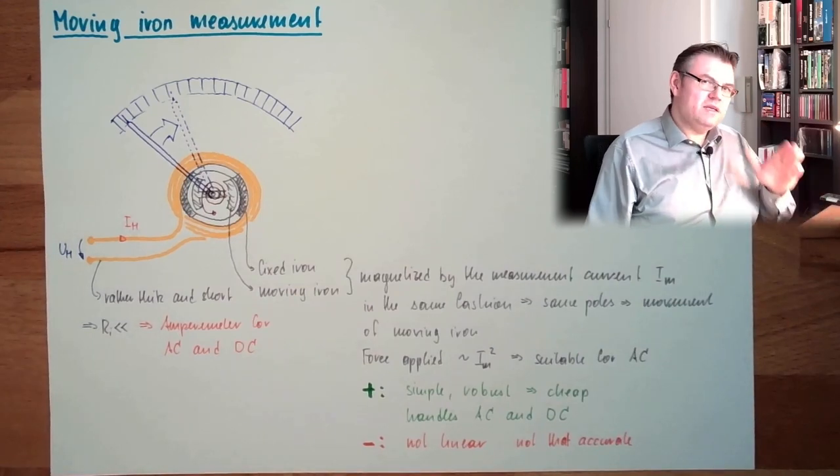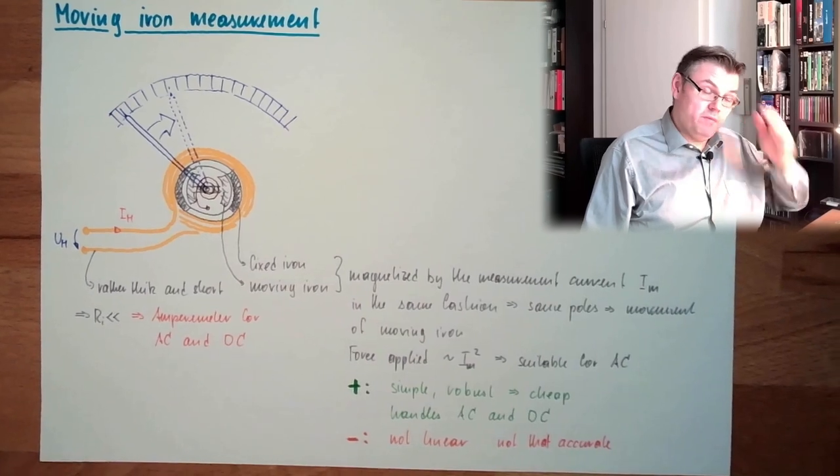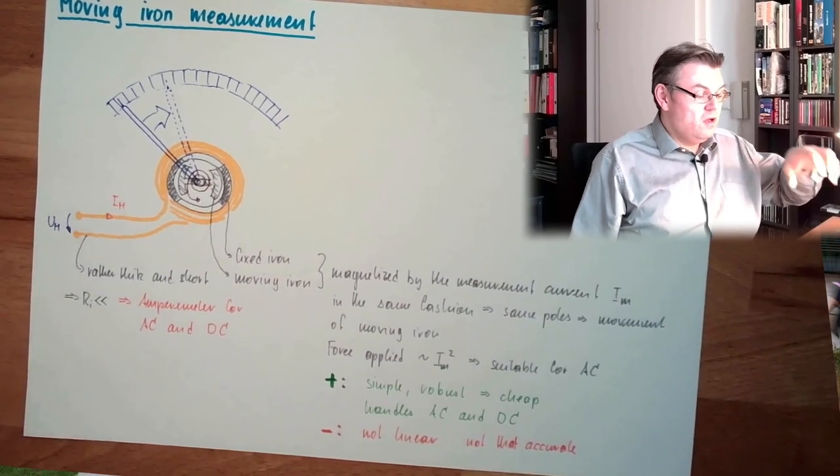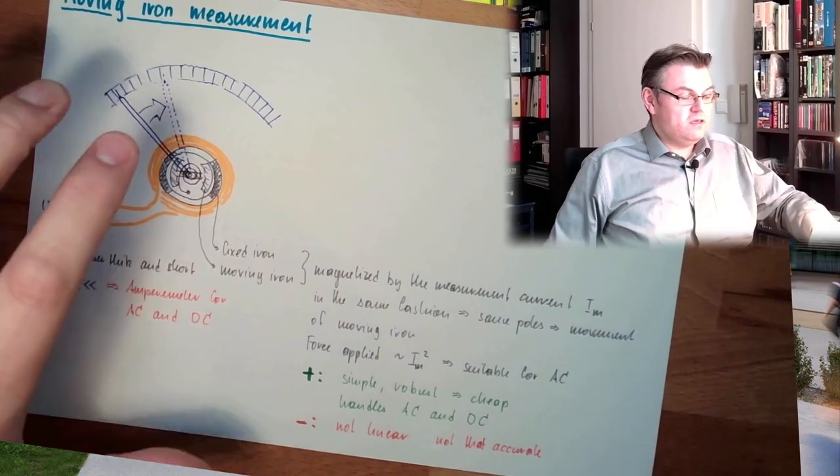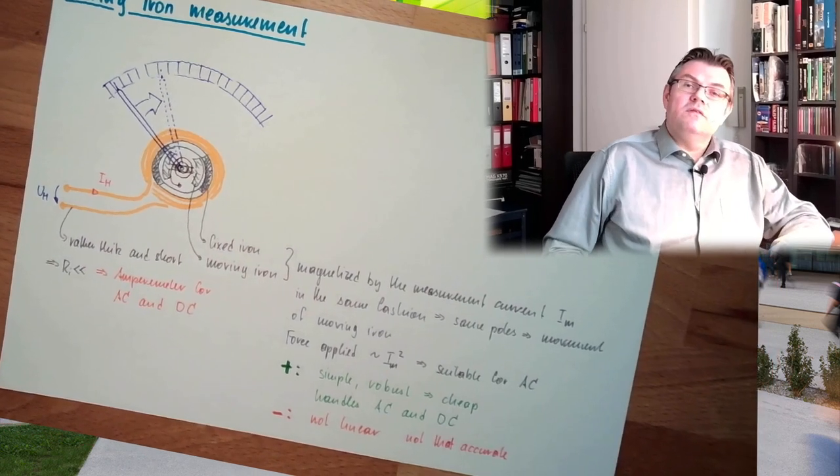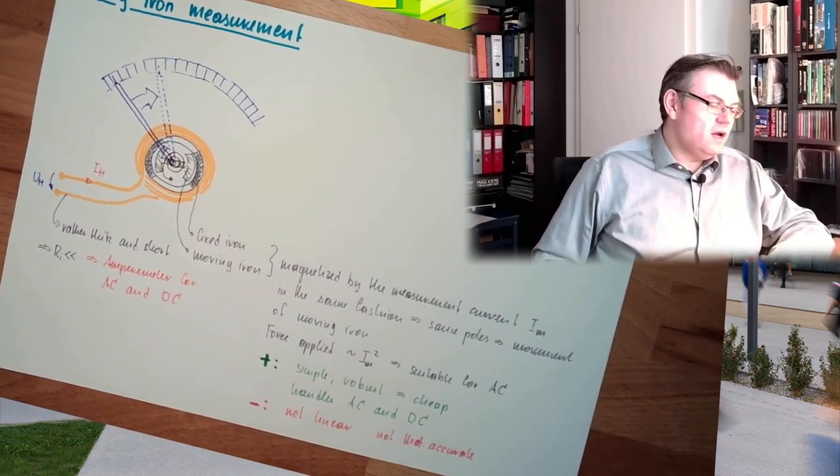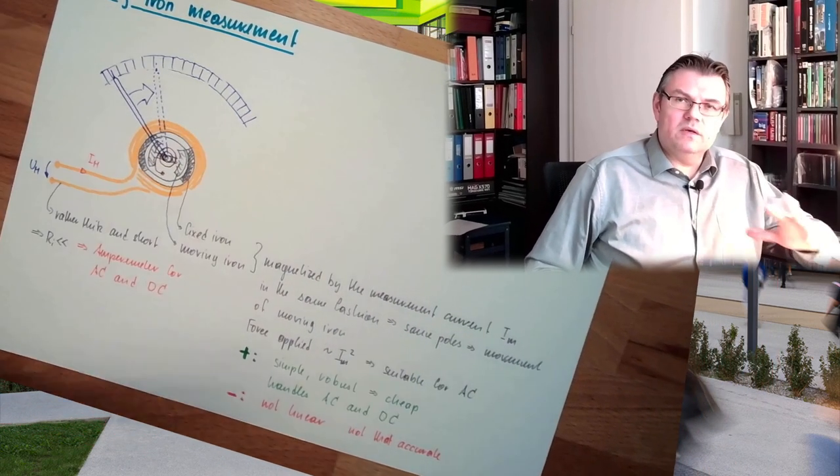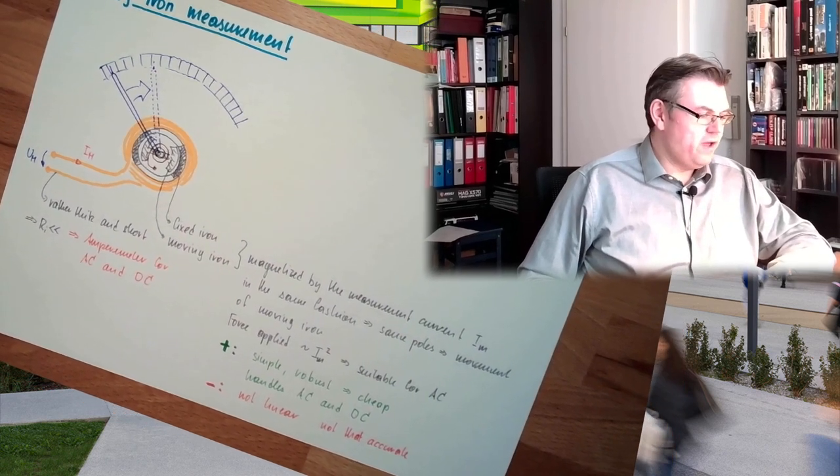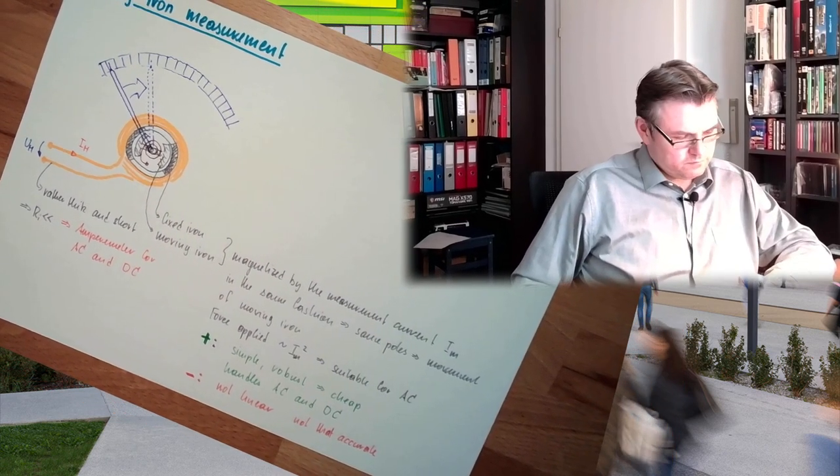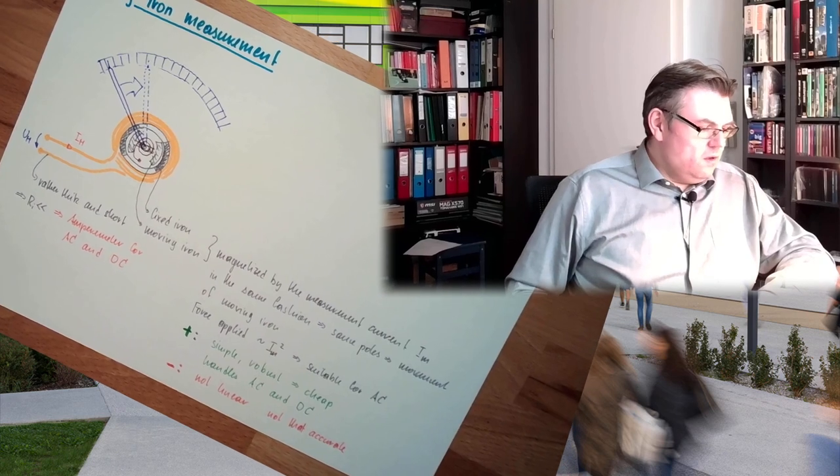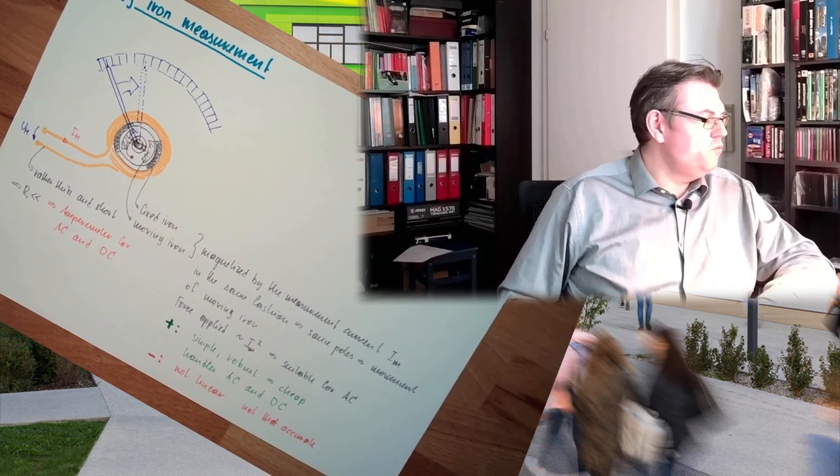If you want to have a precise, really precise measurement, moving coil measurement. If the accuracy of this is enough, you can look at the accuracy class. This is robust and so on. Moving iron measurement. These are the possibilities.